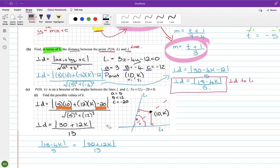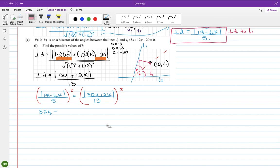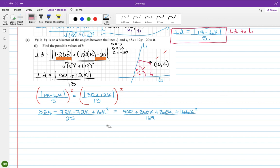Okay, so modulus on both sides. There's not really a lot I can do except to square both sides. So let's do that. So I get 324 minus 72k plus 16k² all over 25, and then the right-hand side is 900 plus 360k plus 144k² all over 169.